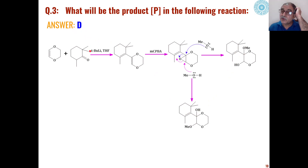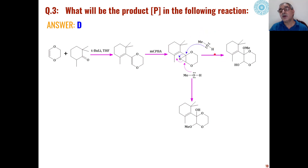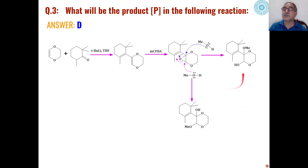Product D is formed by opening of the epoxide ring by the methanol present as solvent. If no polar protic solvent were used, the epoxide would remain intact. But because of the presence of this polar protic solvent, the epoxide ring breaks to give an alcohol system.